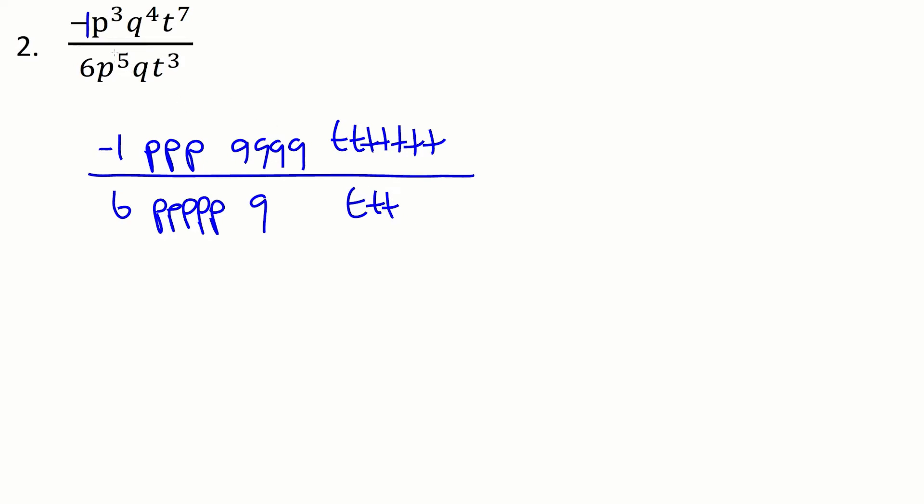We have three p's in the front and five in the bottom, so three of them are going to cancel and you'll be left with two in the bottom. You can separate things off and say five minus three is two in the bottom.